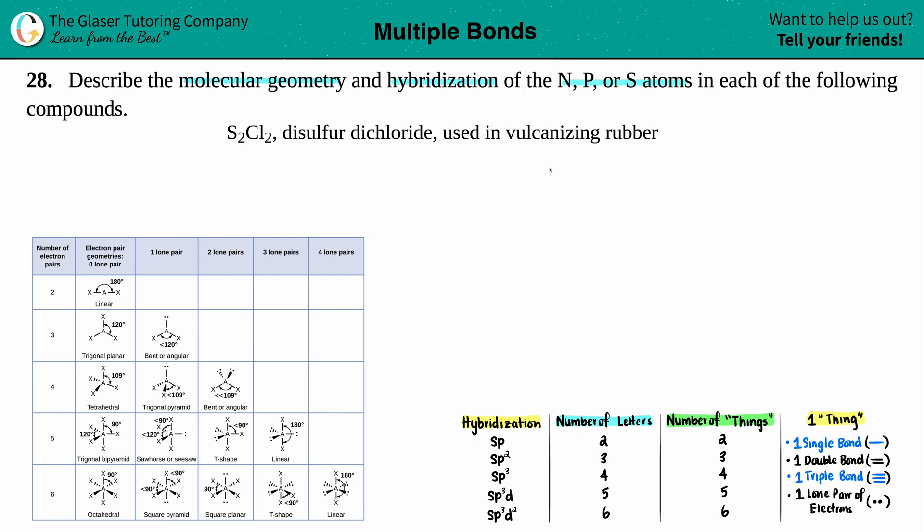To find the molecular geometry and hybridization of a covalent compound, the first thing I can suggest is to always draw the Lewis structure first. As you get better and more adept at understanding geometry and hybridization, you can just look at this molecule and figure it out.